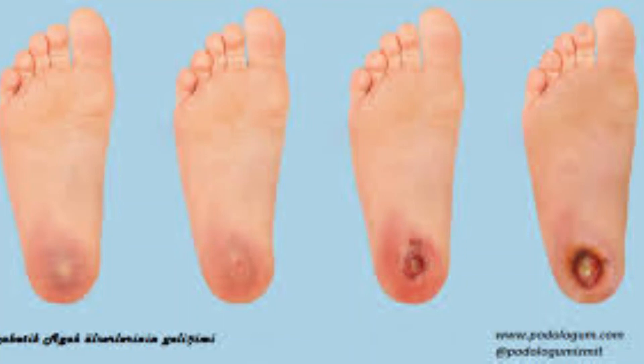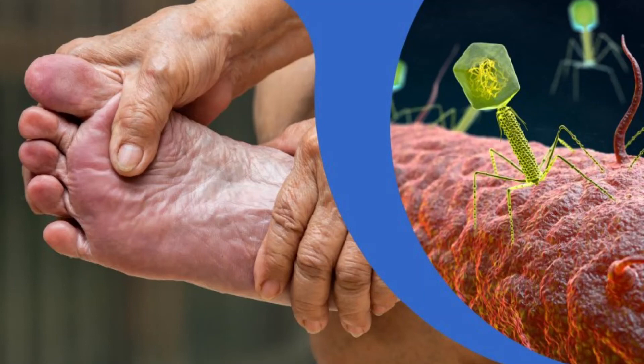Most women who have gestational diabetes deliver healthy babies. However, untreated or uncontrolled blood sugar levels can cause problems. Complications in the baby include excess growth — extra glucose can cross the placenta, triggering the baby's pancreas to make extra insulin, causing the baby to grow too large. This can lead to a difficult birth and sometimes the need for a C-section.